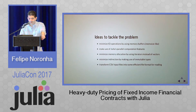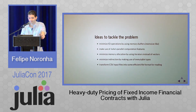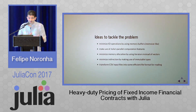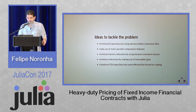Some ideas I used to tackle the problem. I don't use any complicated macro stuff — just simple stuff. But since you can write for-loops in Julia, that makes all the difference and makes all these strategies possible. I try to minimize IO operations by using memory buffers. I make use of Julia's parallel computation features. I minimize memory allocation by using iterators instead of allocating vectors. I minimize indirection by using immutable types when possible — a vector of immutable types should be a contiguous chunk of data. And I transform the CSV files into native Julia data files.